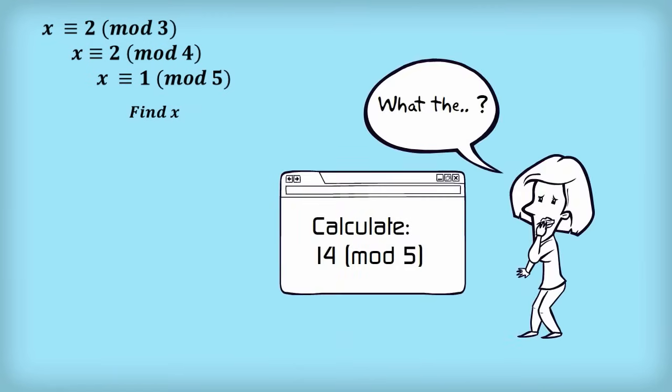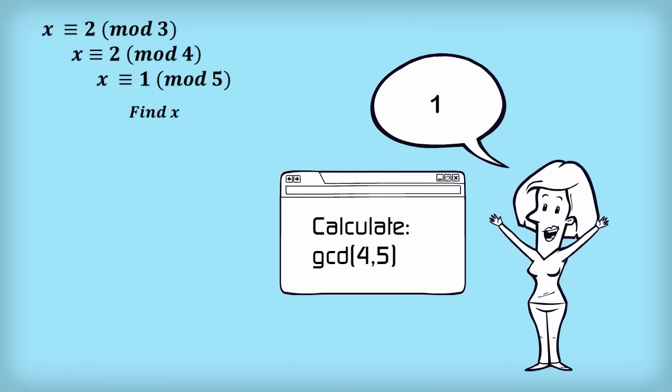You need to understand modular arithmetic to use the Chinese remainder theorem. If you're not comfortable with things like mod 5, check out my video 'The Lazy Mathematician' or search for modular arithmetic on YouTube. You'll also need to understand the GCD, the greatest common divisor, of two numbers.